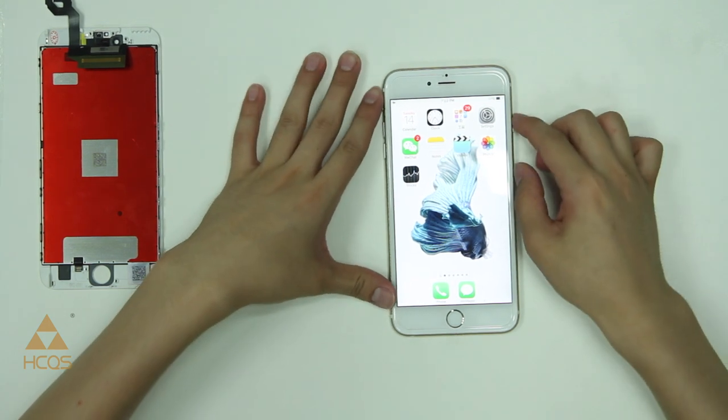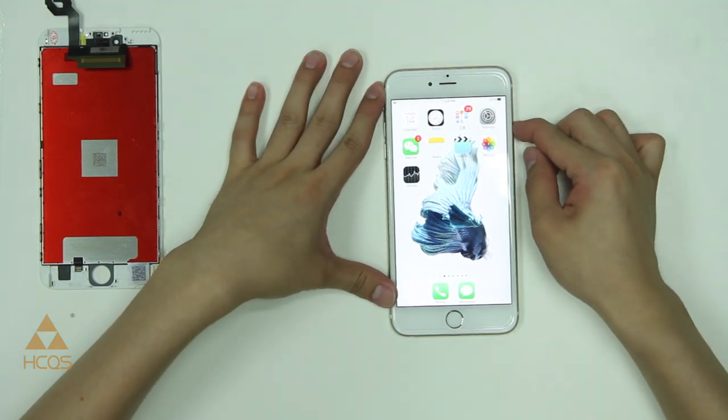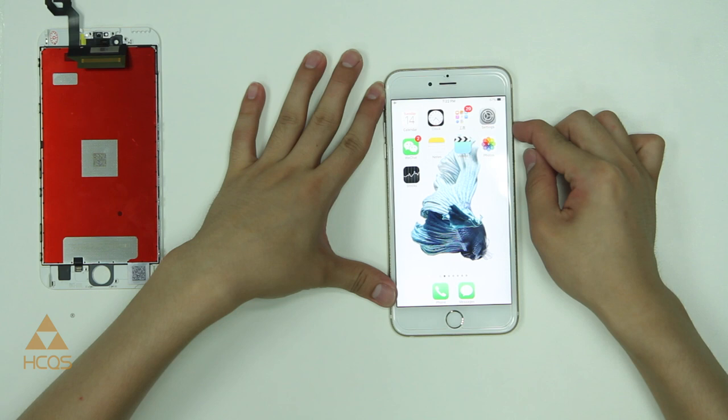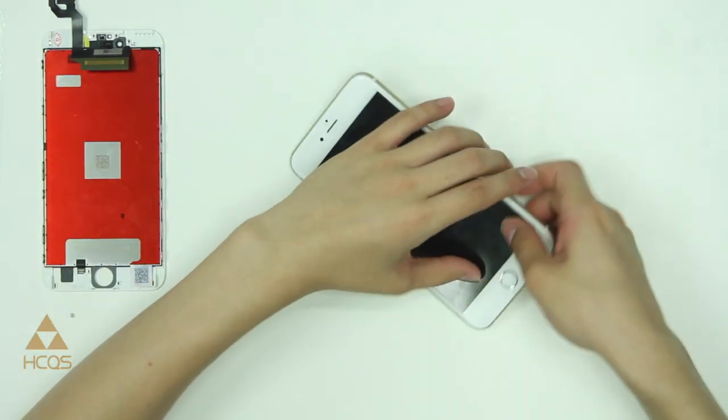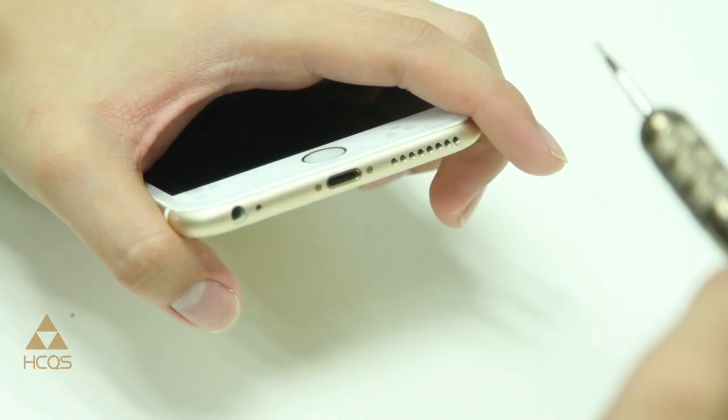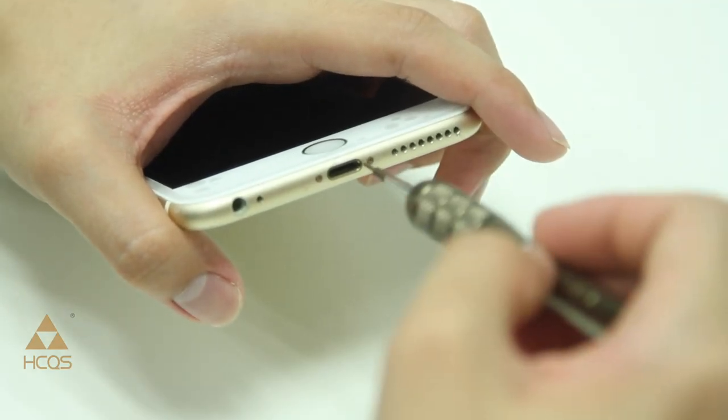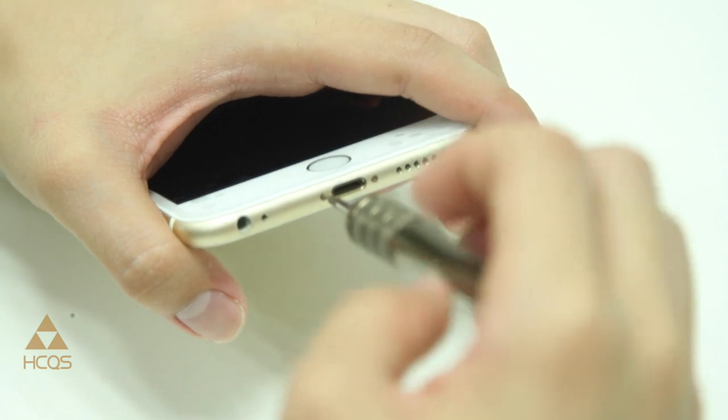First thing we want to do is make sure that we turn the power off on our device before we start working on it. Down at the bottom we have two pentalobe screws adjacent to the lightning port. Go ahead and remove those.